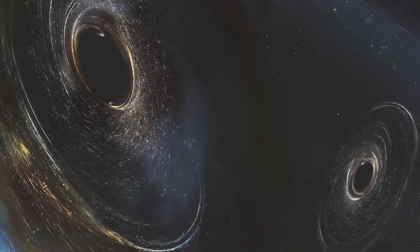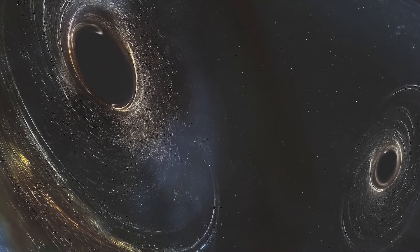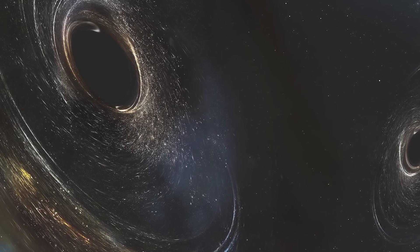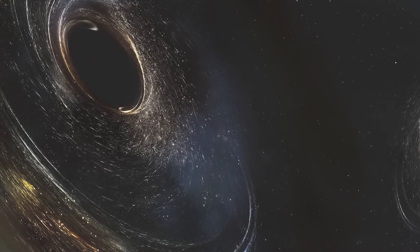This supermassive black hole would have a large enough stable area within the event horizon to hold an entire planet within, and this would orbit the central singularity without being torn apart.